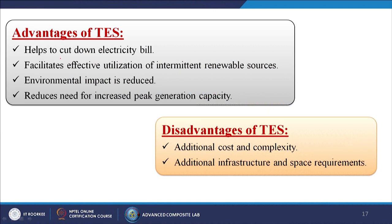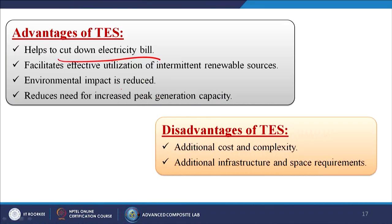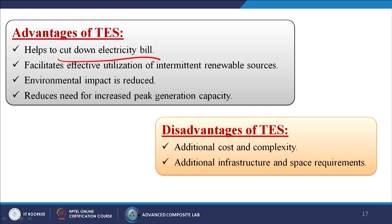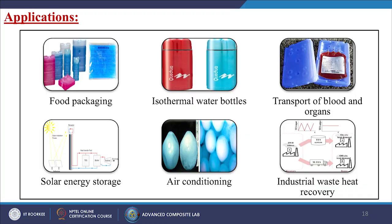Advantages of TES: it helps cut down electricity bills, facilitates effective utilization of intermittent renewable sources, reduces environmental impact, and reduces the need for increased peak generation capacity. Disadvantages include additional cost, complexity, and infrastructure and space requirements. Applications include food packaging, isothermal water bottles, transport of blood and organs, solar energy storage, air conditioning, and industrial waste heat recovery.